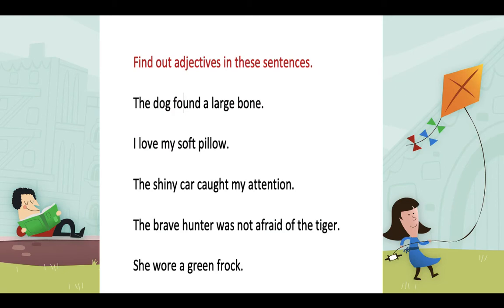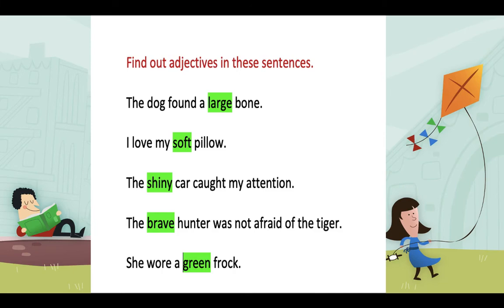Now here is an exercise for you. Find the adjectives in these sentences: 'The dog found a large bone.' 'I love my soft pillow.' 'The shiny clock caught my attention.' 'The brave hunter was not afraid of the tiger.' 'She saw a green frog.' The answers are: large, soft, shiny, brave, and green. These are the words describing the nouns right next to them. I hope your answers match mine!